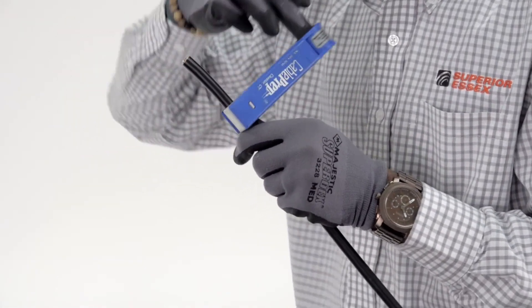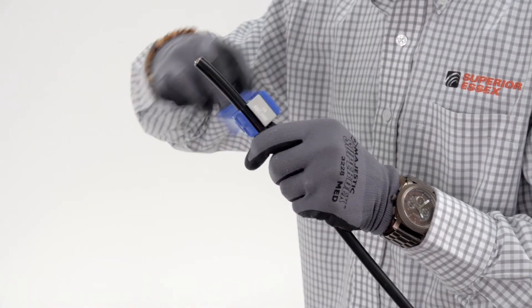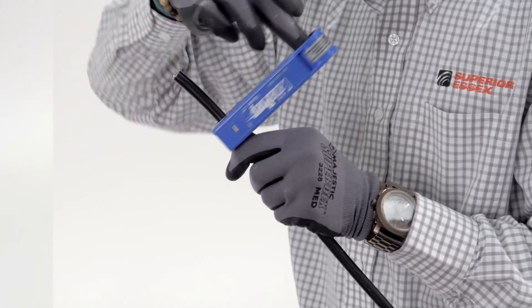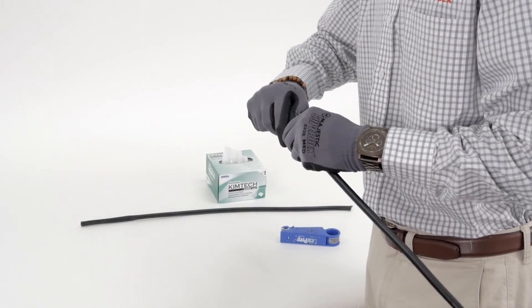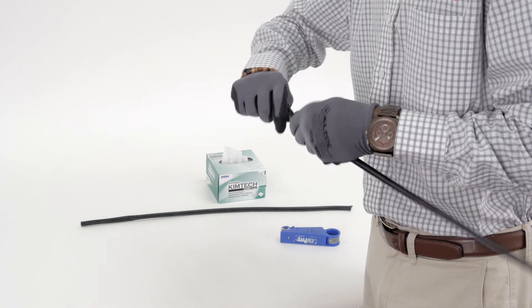Ring cut the outer jacket, taking care not to cut into the shield. Flex the cable about the cut to remove the outer jacket and shield.